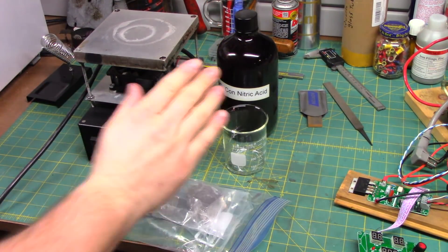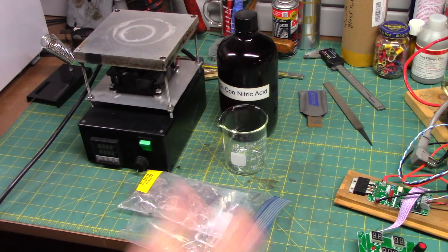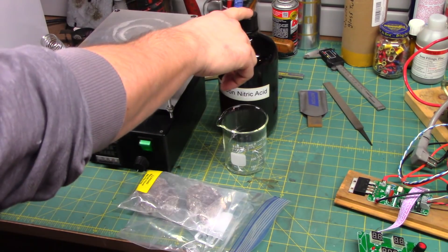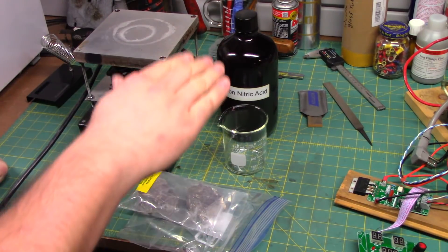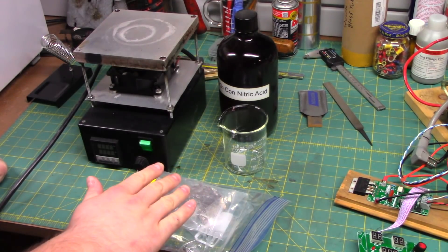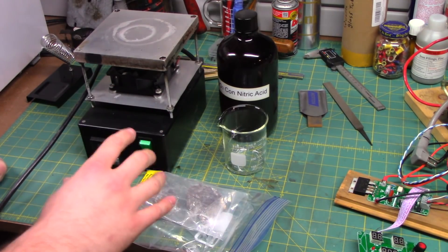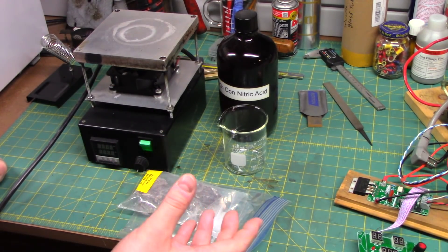So, the game plan. Convert this elemental bismuth into bismuth trioxide. And basically we're going to do that, dissolve it in concentrated nitric acid, boil that down into pure bismuth nitrate. And at that point we will thermally decompose it into bismuth trioxide.